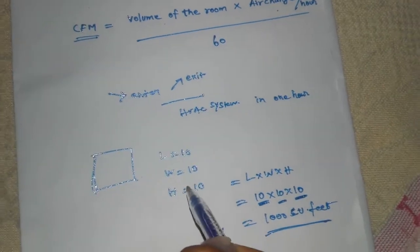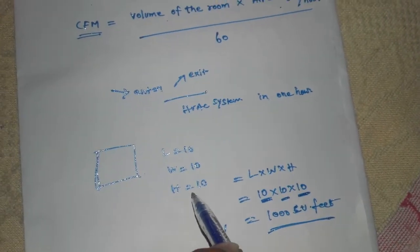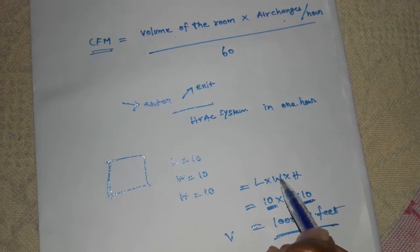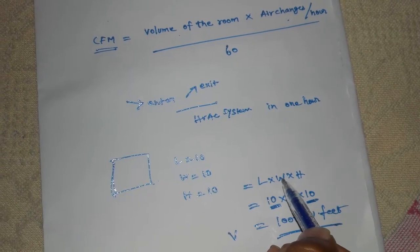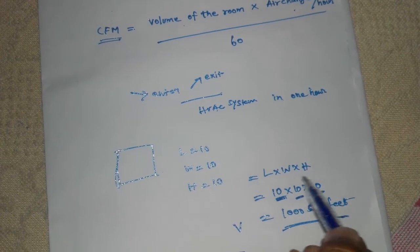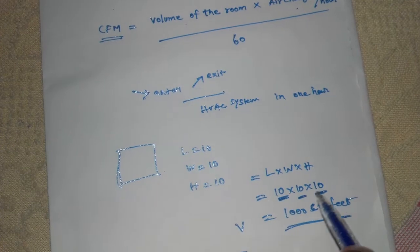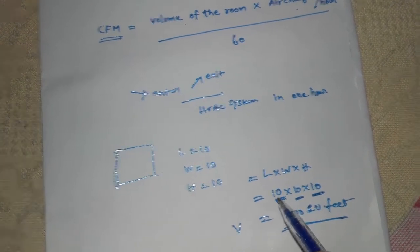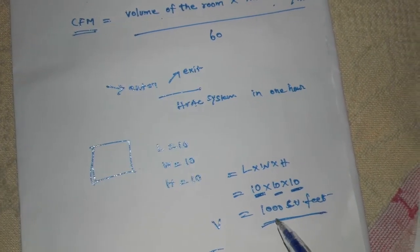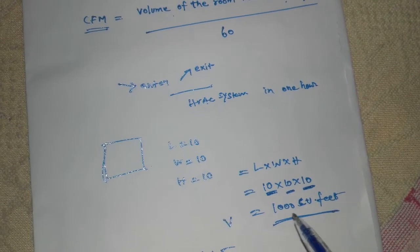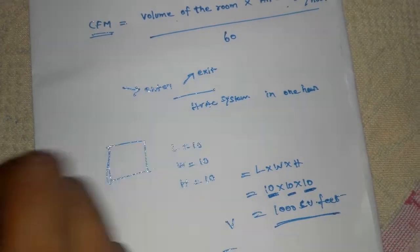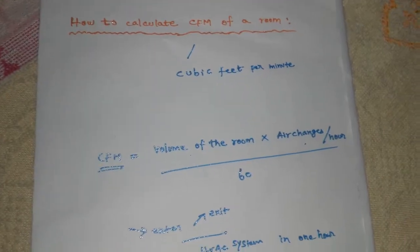The length of the room is 10 feet, the width is 10 feet, and the height is 10 feet. The volume of the room is length times width times height, so 10 into 10 into 10 equals 1000 cubic feet.